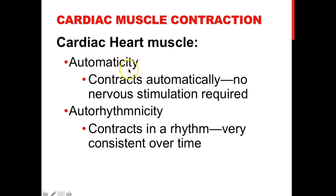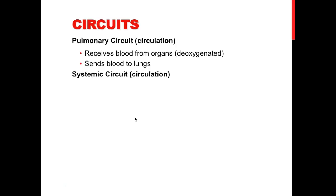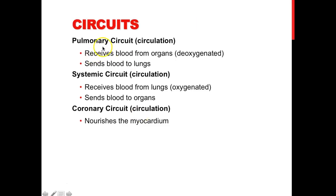First, cardiac muscle has automaticity — it can contract by itself without any help from the nervous system. If you've seen videos of heart transplants, the heart is still contracting after being removed from the body, receiving no stimulation from the nervous system. Second, it has auto-rhythmicity, meaning it not only contracts by itself but also contracts in a rhythm — your heartbeat happens in a particular rhythm.